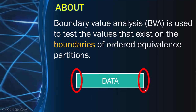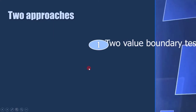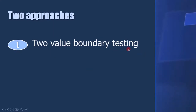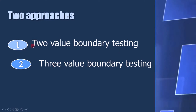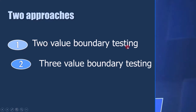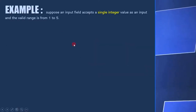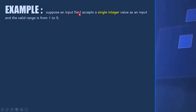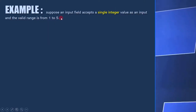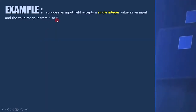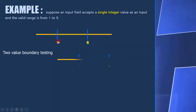There are two approaches by which we can apply boundary value analysis: two-value boundary testing and three-value boundary testing. If nothing is mentioned, then you have to apply two-value boundary testing. Now let's see a few examples to understand both approaches. Suppose the requirement is: an input field accepts a single integer value and the valid range is from 1 to 5. Here it is clear that 1 and 5 are the boundary values.